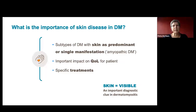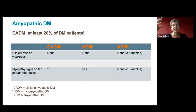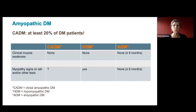Skin involvement also has an important impact on the quality of life of patients — it is visible to them and can cause pain and itch. It is not always easy to control. There is a subgroup of patients where the cutaneous part is the most predominant feature of the disease — patients who present with quite typical skin lesions but where you find no muscle weakness on clinical examination. This is called clinical amyopathic dermatomyositis.